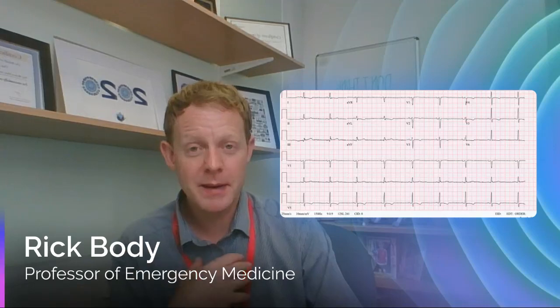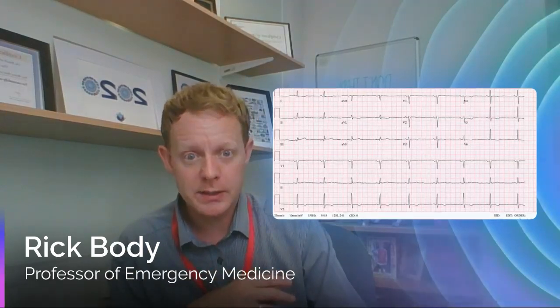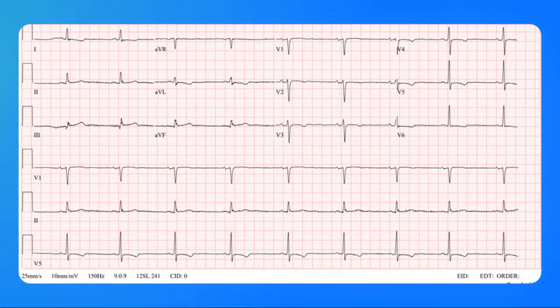This is one of the most commonly missed abnormalities in my experience. And here we've got a case of a subtle inferior STEMI. So obvious abnormalities that you might see on this ECG are the T-inversion through the precordial leads — everyone seems to spot that, it seems obvious — but there's also an inferior STEMI.